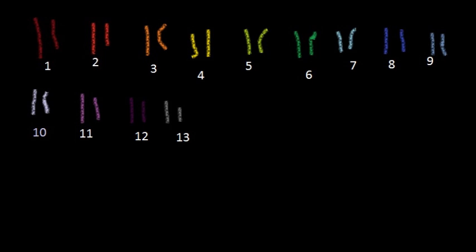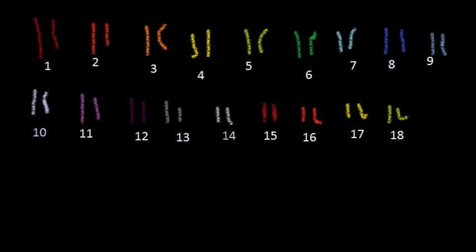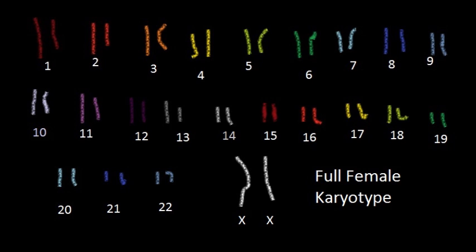In the human karyotype, there are 23 pairs, which include 22 autosomal pairs and one sex chromosome pair.